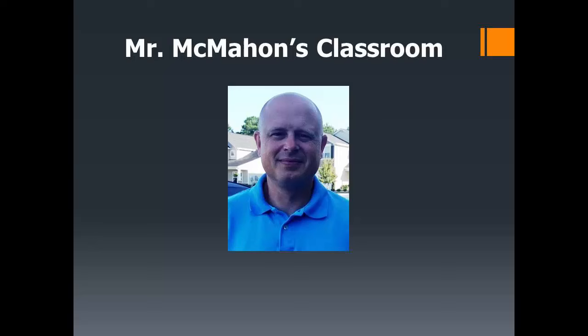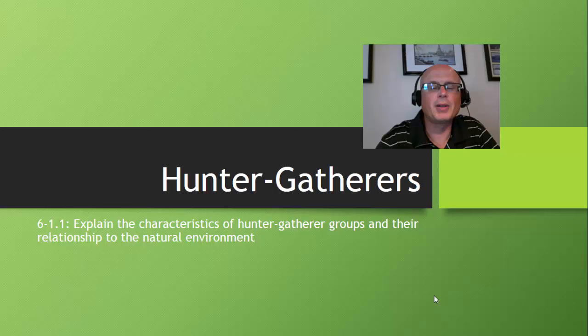Welcome students to another episode of Mr. McMahon's Classroom. Today we begin our first unit of the year, which is going to be on hunter-gatherers. This comes from standard 6-1-1, which is to explain the characteristics of hunter-gatherer groups in relationship to the natural environment. So we're going to take some time to learn about hunter-gatherers and let's get started.